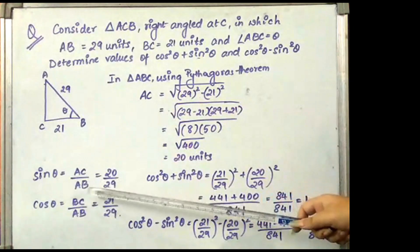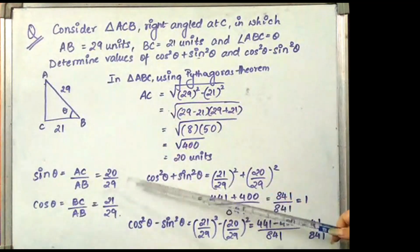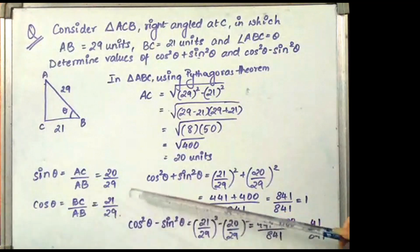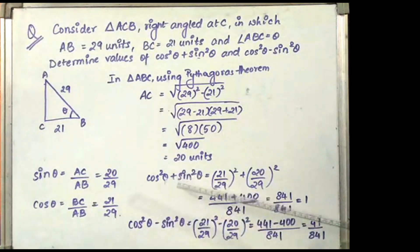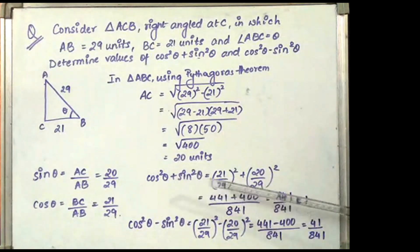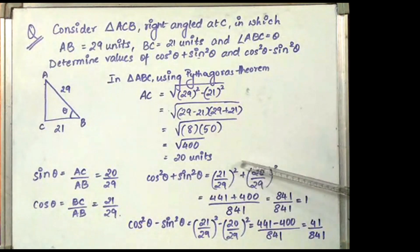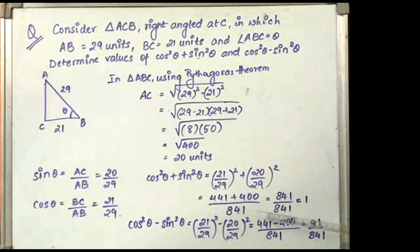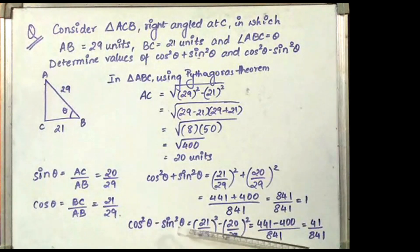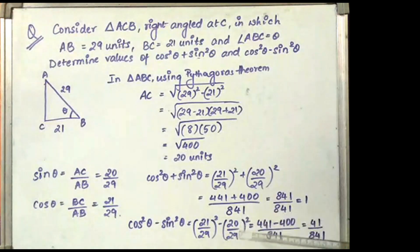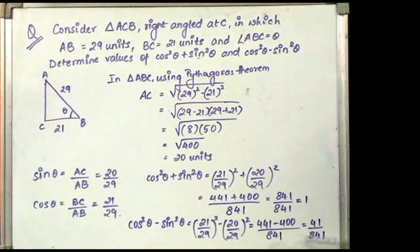Now sin θ is AC by AB, which is 20 by 29, and cos θ is BC by AB, which is 21 by 29. Now cos²θ + sin²θ is (21/29)² + (20/29)² = (441 + 400) by 841, which is equal to 1. And cos²θ - sin²θ is (21/29)² - (20/29)² = (441 - 400) by 841, which is equal to 41 by 841.